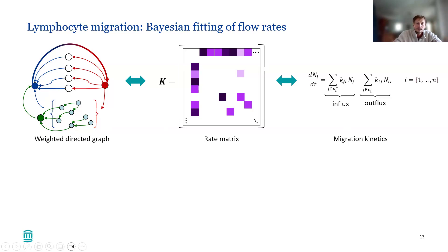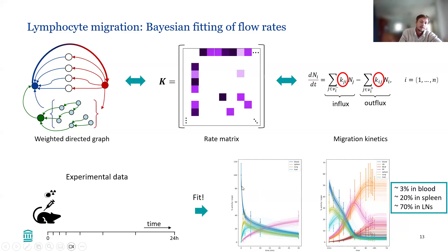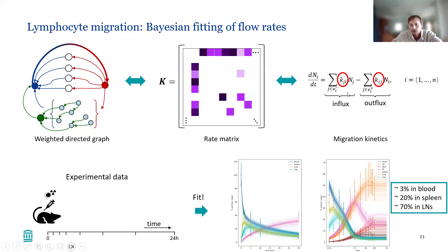Representing things as a graph is a very insightful way to get at the migration kinetics. We still have to fit the parameters — for blood flow they are typically known, but for lymphocyte flow through lymphatic compartments we have to fit them. We use experimental data from radio-labeled lymphocyte experiments: every so many minutes a few mice are sacrificed and we observe how lymphocytes distributed over different compartments. We fit our model to that data to find the rate parameters.